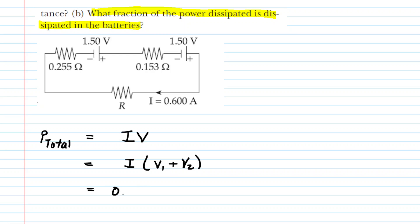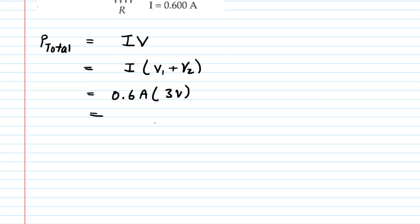So now all we have to do is take the current of 0.6 amps, and then multiply that by the sum of the voltages. Now, 1.5 volts plus 1.5 volts, of course, is 3 volts. So when we multiply these out, we're going to get a total power delivered by the batteries of 1.8, and then this would be in watts.